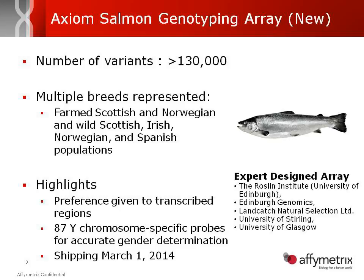The next array is a salmon array, and you'll be hearing from Dr. Allan Archibald from the Roslin Institute about it. This array is also going to be public. It has greater than 130,000 SNPs with multiple breeds represented. It's an expert-designed array developed with the Roslin Institute, Inbra Genomics, University of Stirling, and University of Glasgow. Experts gave preference to transcribed regions in the design. This is shipping March 1st and is also a high-density array.